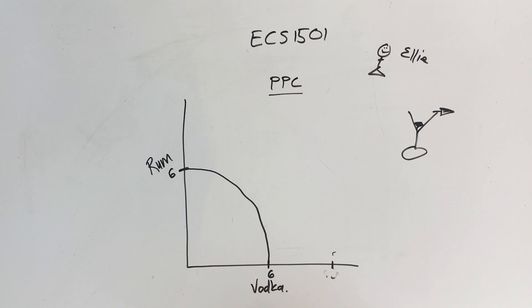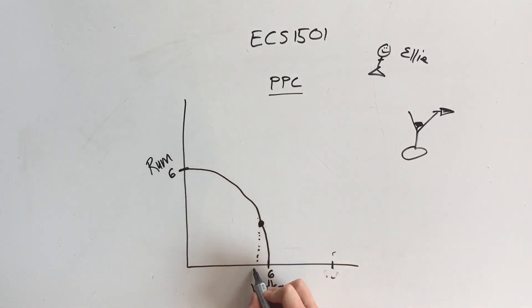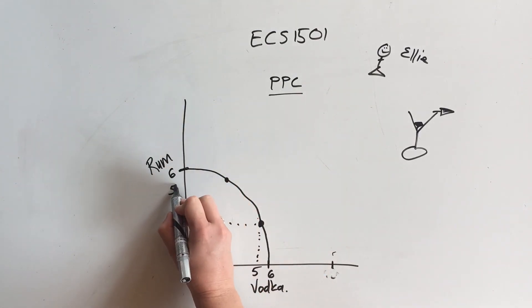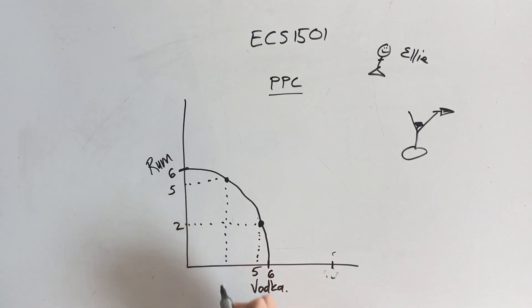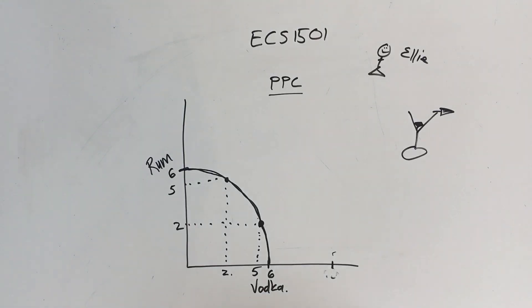Now on this curve we can choose any combination. So we can go over there and say we are going to buy five bottles of vodka and two bottles of rum, or we can go all the way up there and say we're going to buy five bottles of rum and two bottles of vodka. The production possibility curve says that on this line we are maximizing our possibilities, so this is an efficient line. We can choose to buy somewhere over there, for example two bottles of vodka and two bottles of rum, but it's not optimal.